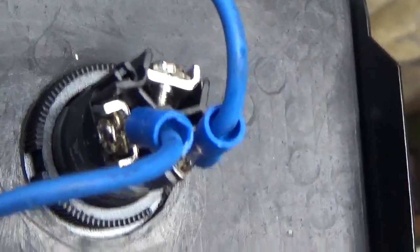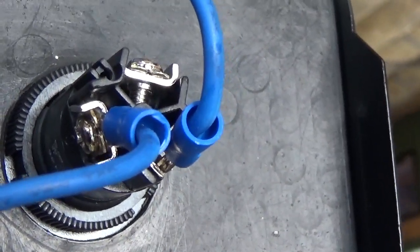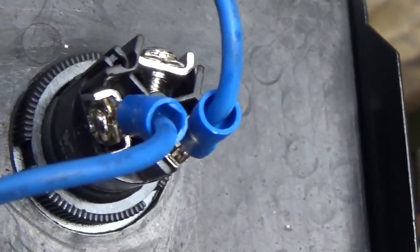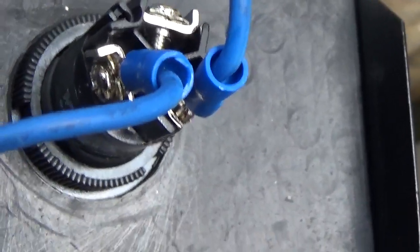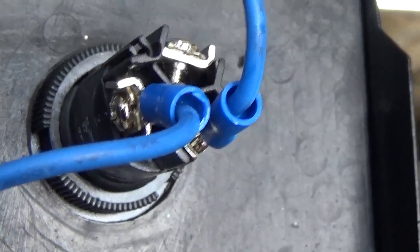Now, on the push button switch, the wires go to the normally open side. One will be a common wire, and one will say NO, and one will say NC. You want it on the NO for the normally open, but when you push the button, it closes the circuit and powers the lift, and up you go.